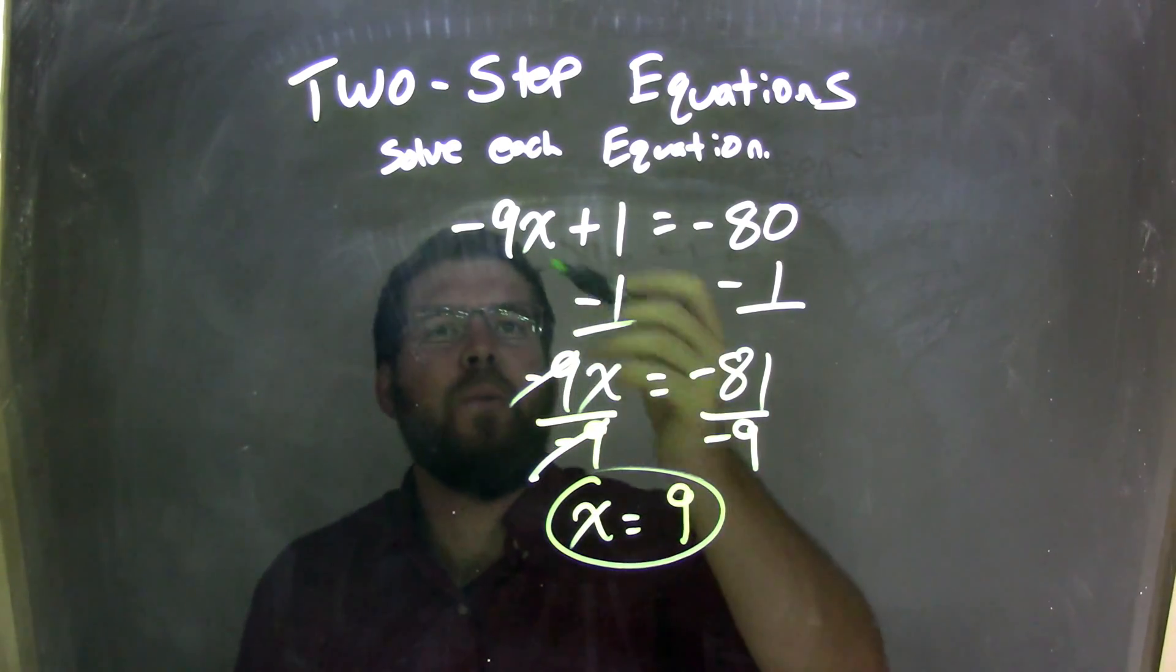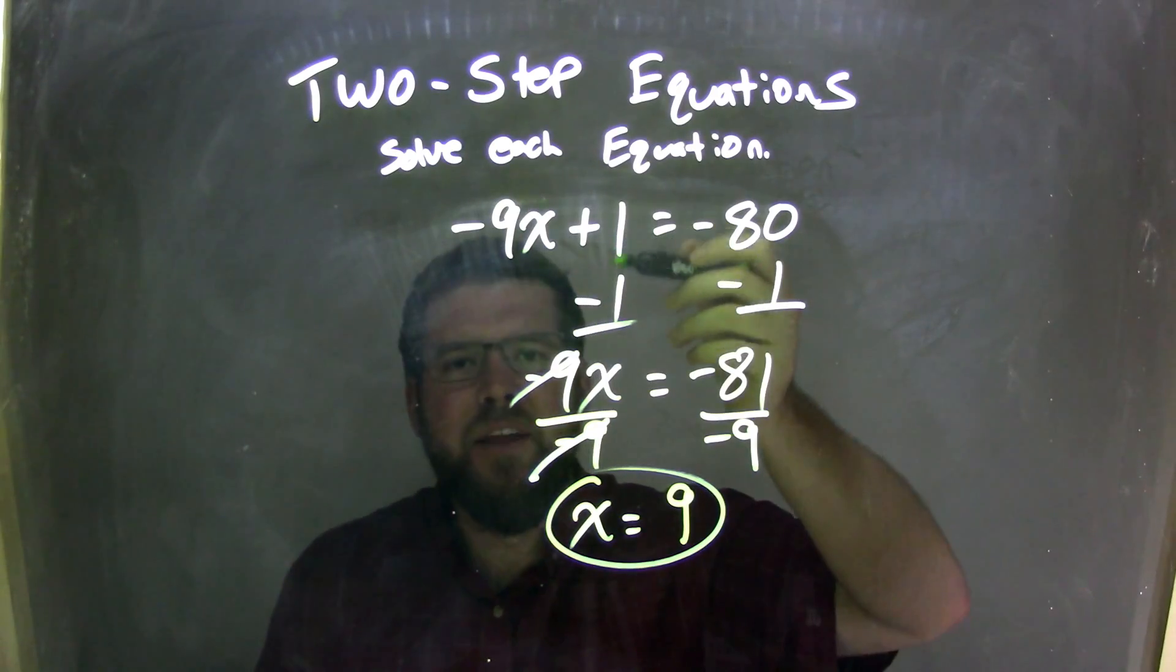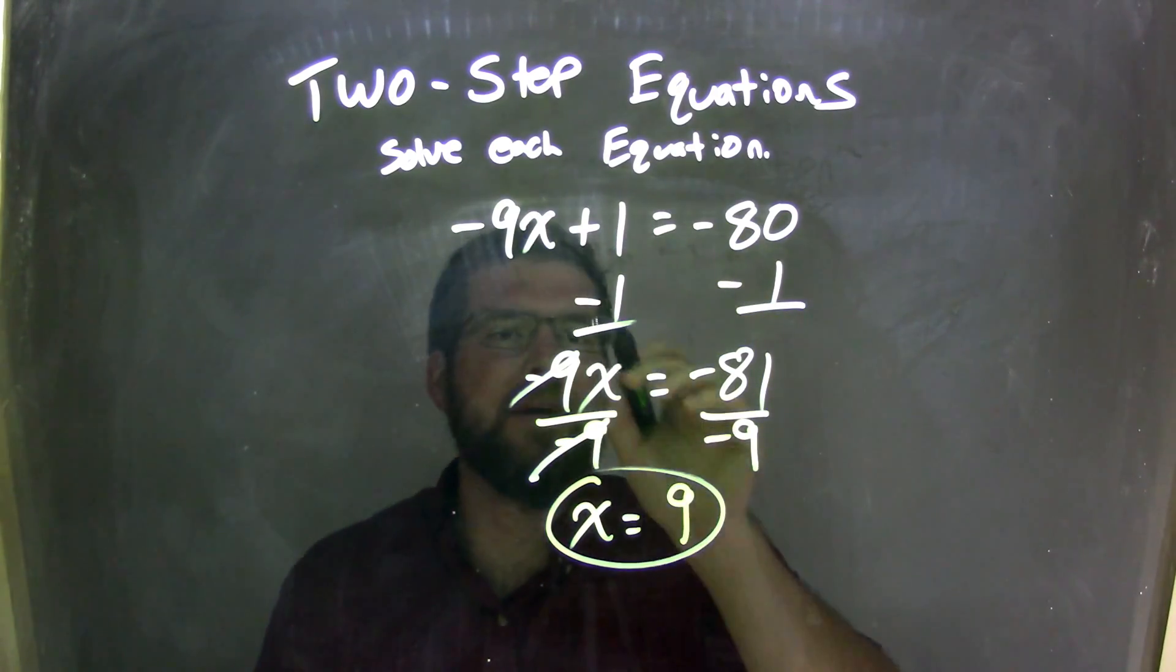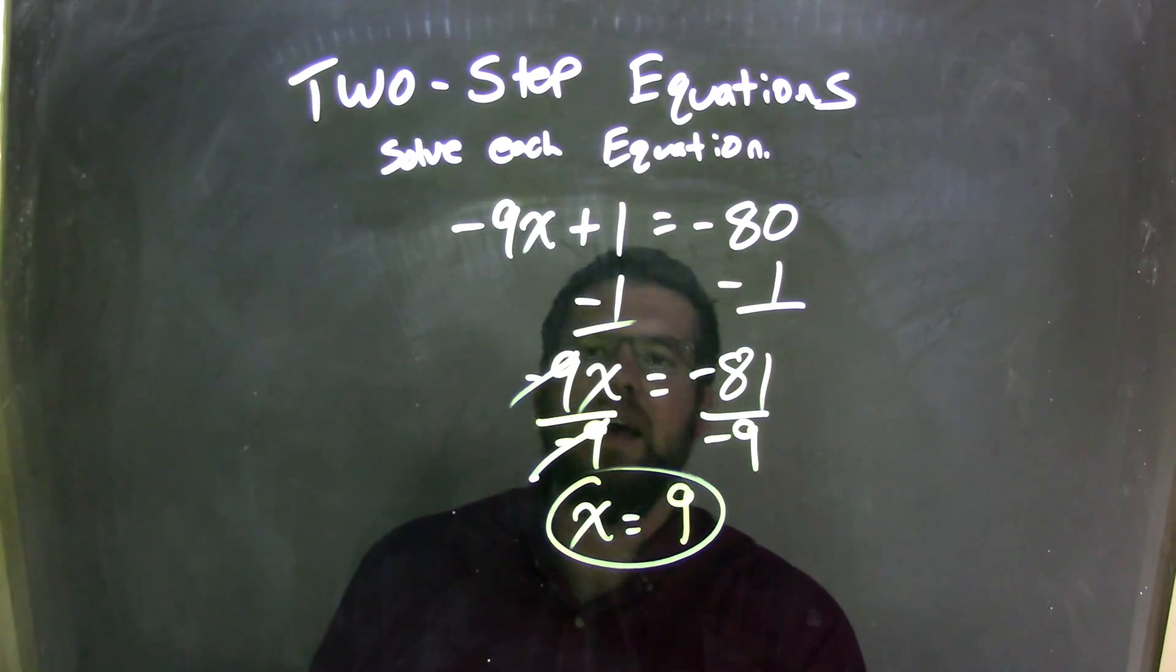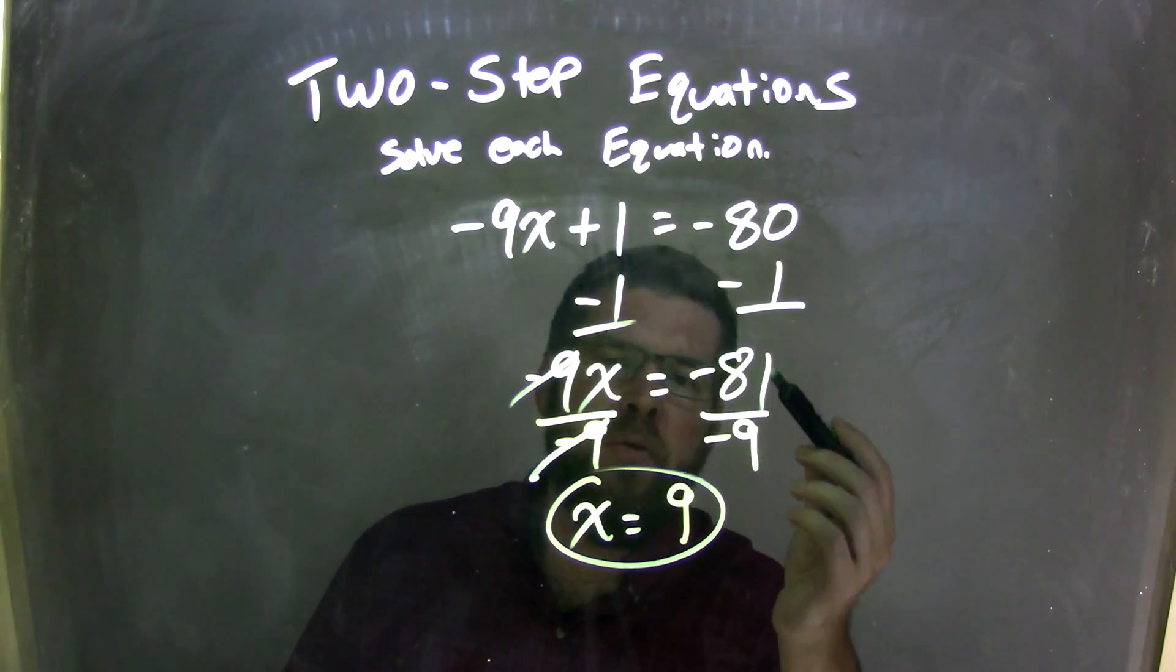Let's recap. We had negative 9x plus 1 equals negative 80. Opposite of that addition is subtraction. So I subtracted 1 from both sides, leaving me with negative 9x on the left and negative 81 on the right.